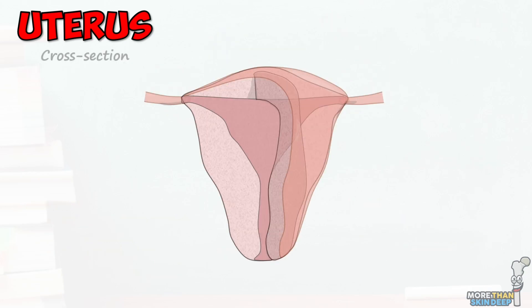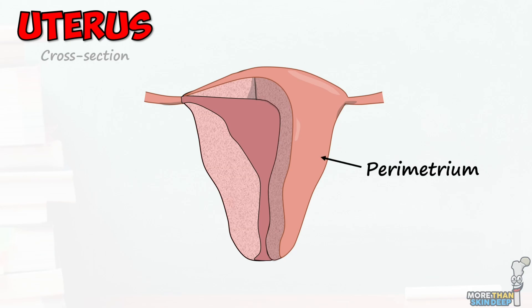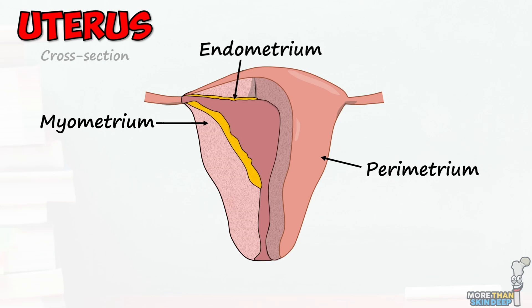If we look at the uterus in cross-section, we can see it has three unique tissue layers. Around the outside is a thin epithelial layer continuous with the peritoneum, known as the perimetrium. Then we have the myometrium, which is a thick layer of smooth muscle cells. And lastly, the endometrium, which can be further broken down into a basal and a superficial layer. The superficial layer is the layer that responds to hormonal changes in the blood to thicken throughout the menstrual cycle before being shed, causing menstrual bleeding.